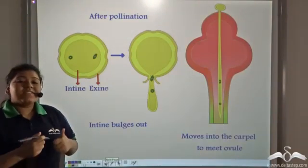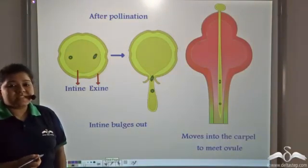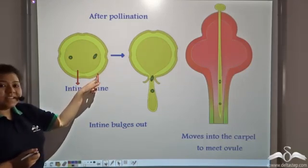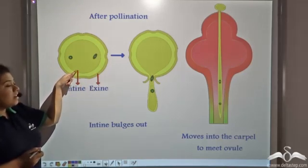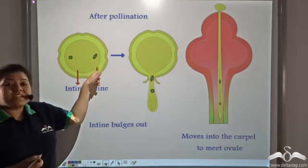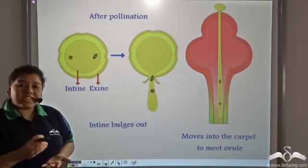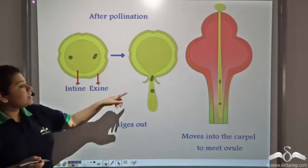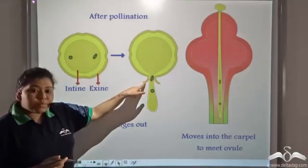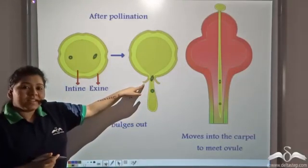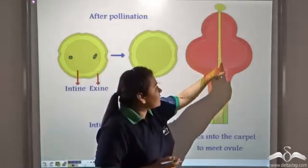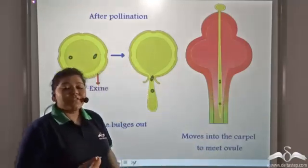We have previously studied the structure of a pollen grain. The pollen grain has an outer exine and an internal intine. Now after pollination, that is after this pollen grain reaches the stigma, what happens is the inner intine bulges out, breaks open the outer exine, and forms a tube-like structure inside the style of the carpel.